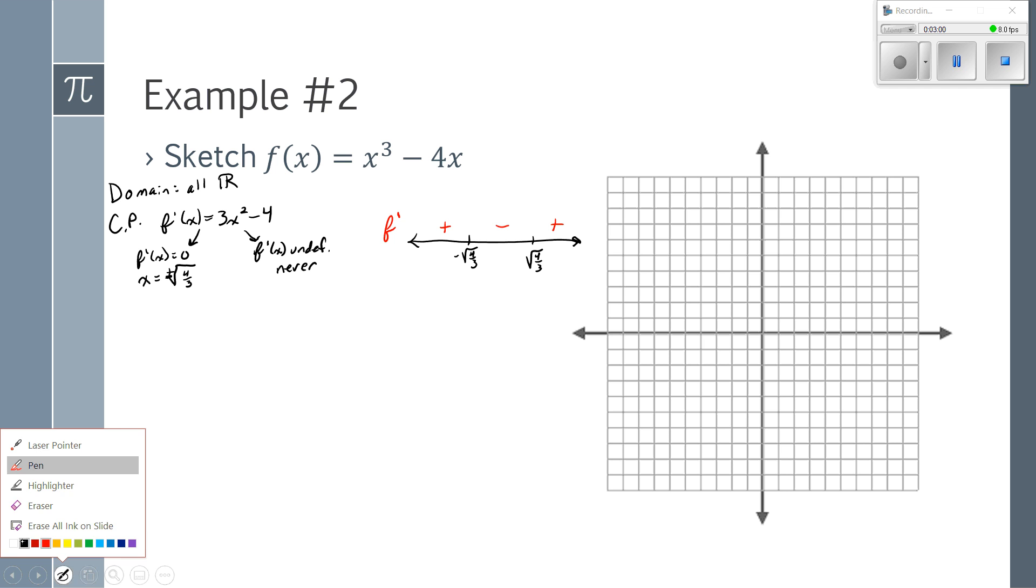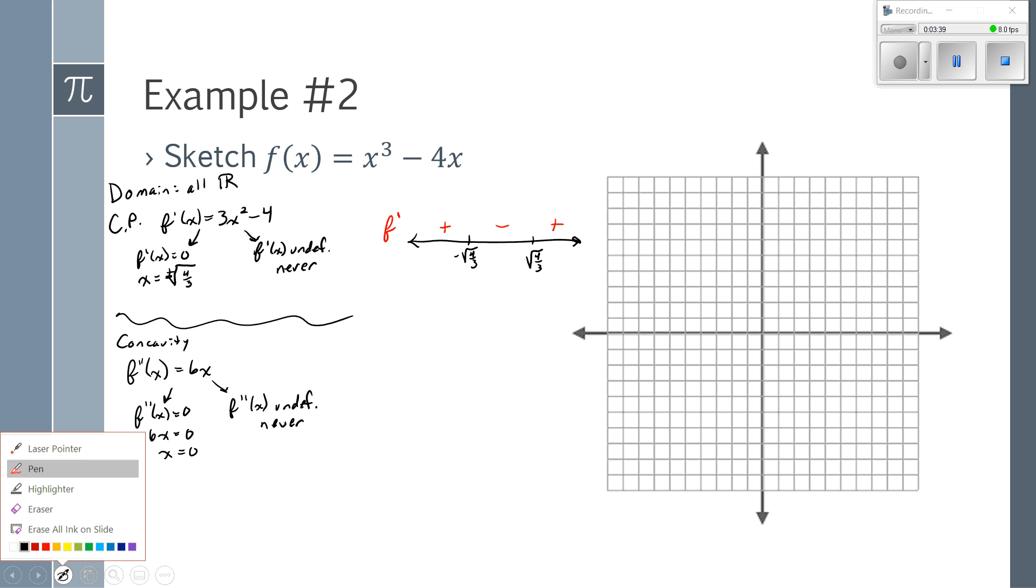So then we moved on to talk about concavity. For concavity, I need the second derivative, which is 6x. And I want to know where is the second derivative equal to 0 or undefined. Well, 6x is never undefined. And 6x would equal 0 when x equals 0. Now I'm going to go ahead and put this on the exact same sign chart that I'm already working on. So here's 0. And this is for f''. If x is less than 0, f'' was negative. If x is greater than 0, f'' is positive.